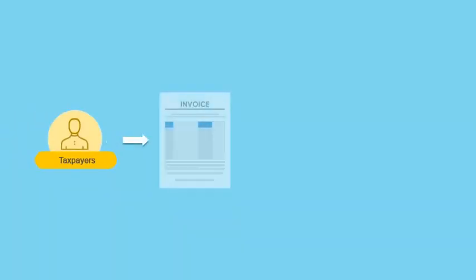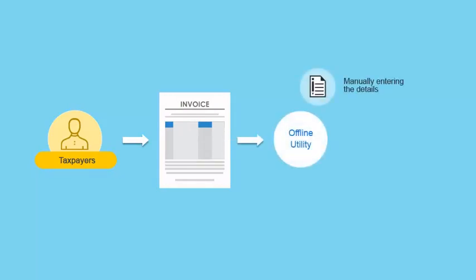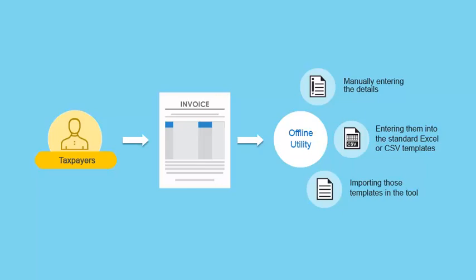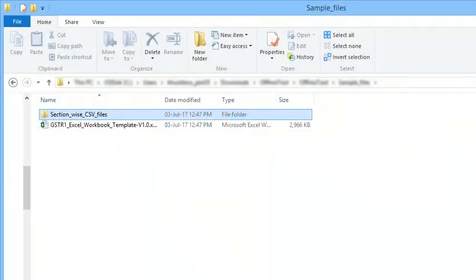Taxpayers can feed invoice and other returns-related data in the offline utility either by manually entering the details directly into the tool, or by entering them into the GSTN-provided standard Excel or CSV templates and then importing those templates in the tool. This video will walk you through the steps of populating invoice data in CSV templates, followed by importing line items in the offline utility and then uploading all of it to the GST portal.